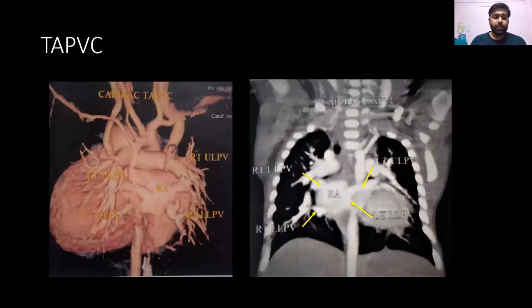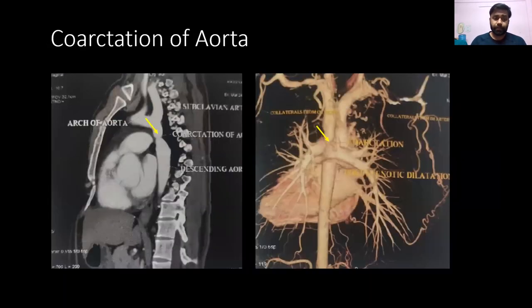Total anomalous pulmonary venous connection (TAPVC) shows drainage of all the pulmonary veins into the right atrium instead of the left atrium.